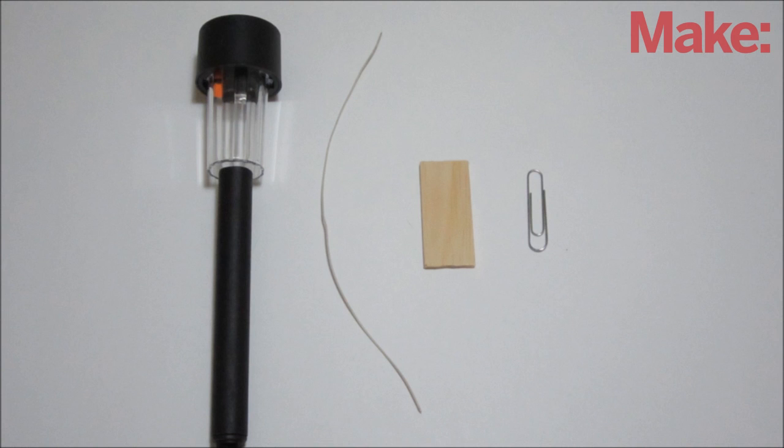To build this project, all you need is a solar path light, a 10 inch piece of insulated wire, a small piece of wood, and a large paper clip.